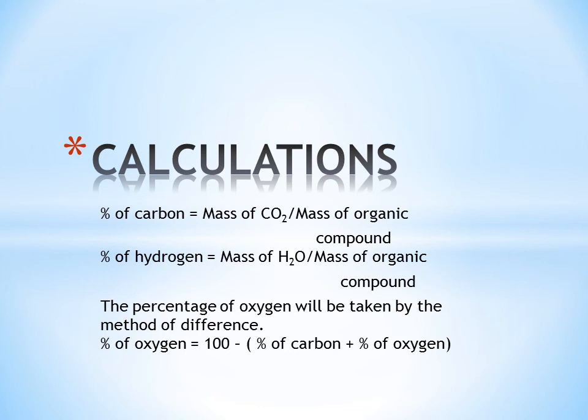For hydrogen, we have to find out the mass of water by the process of combustion analysis and then divide it with the molar mass of organic compound. If we know the amount of two elements present in a compound, we can find out the third element by the process of difference or by the method of difference. So by putting the values, subtracting it through 100, we have an amount of oxygen.